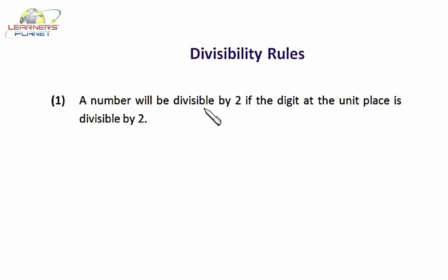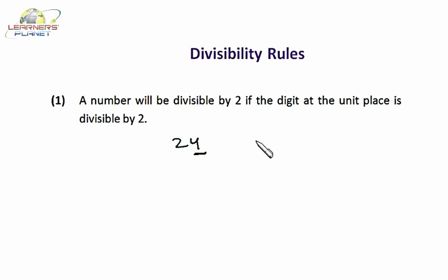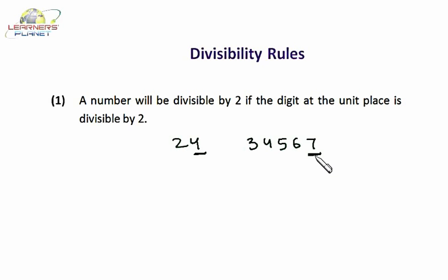Suppose I take an example: 24. The unit digit is an even number, that is 4. So 24 will definitely be divisible by 2. Now in this case, it doesn't matter how many digits are there in the number — maybe 4 digits, 5 digits, or any number of digits. Suppose I take the number 34567. You just see the unit digit — is 7 a multiple of 2? No. 7 is an odd number, so 34567 will not be divisible by 2. Just by looking at the unit digit, we can come to know this.